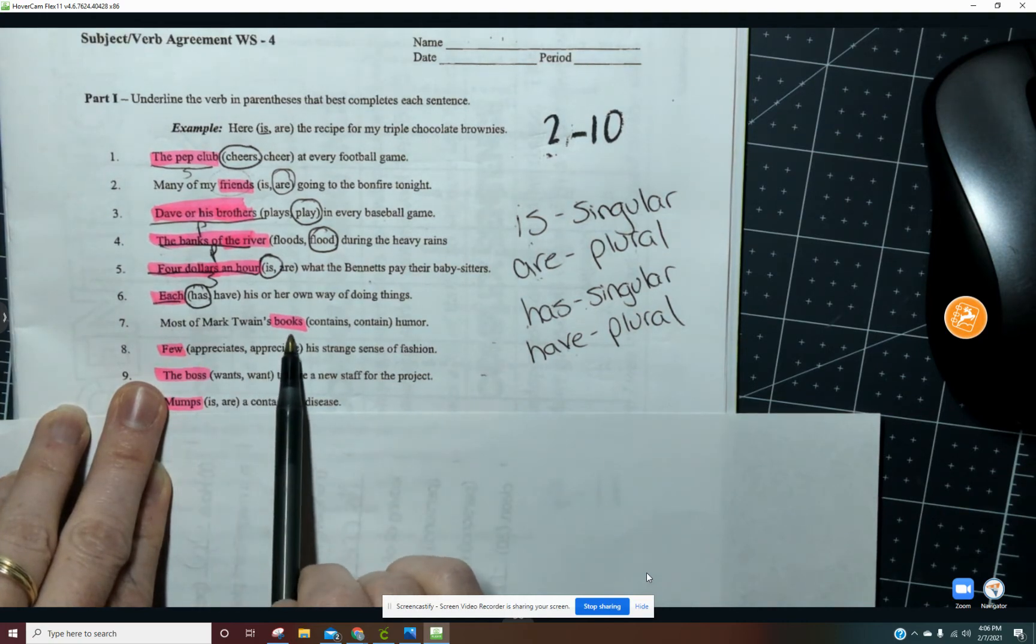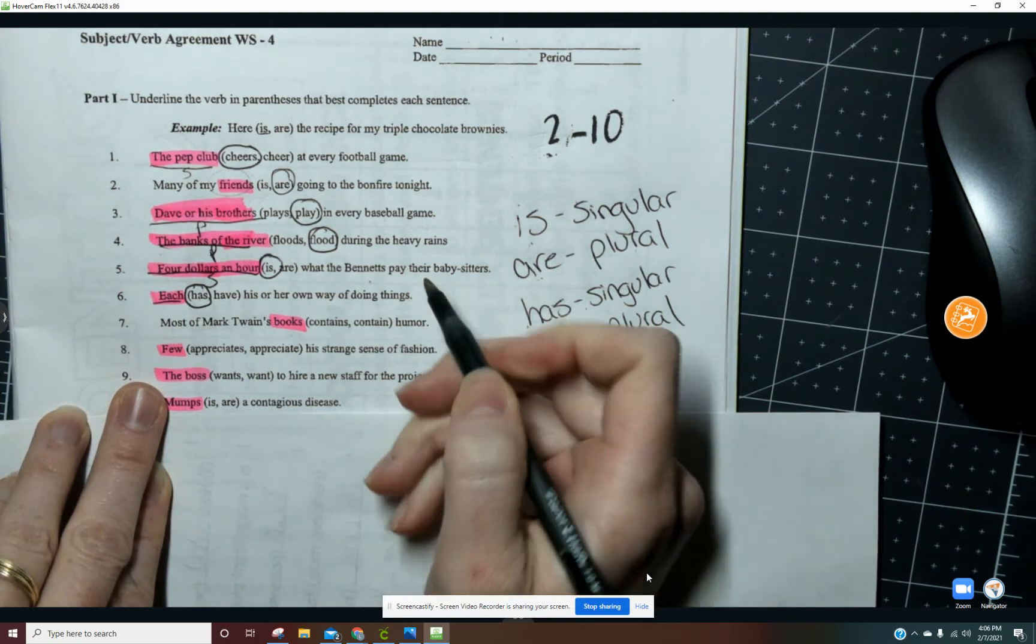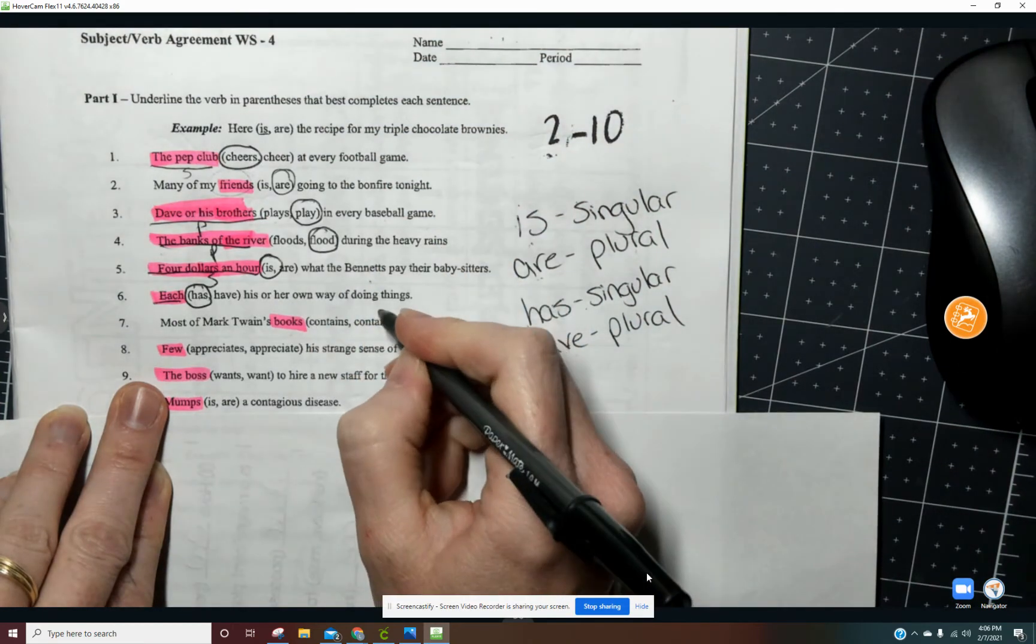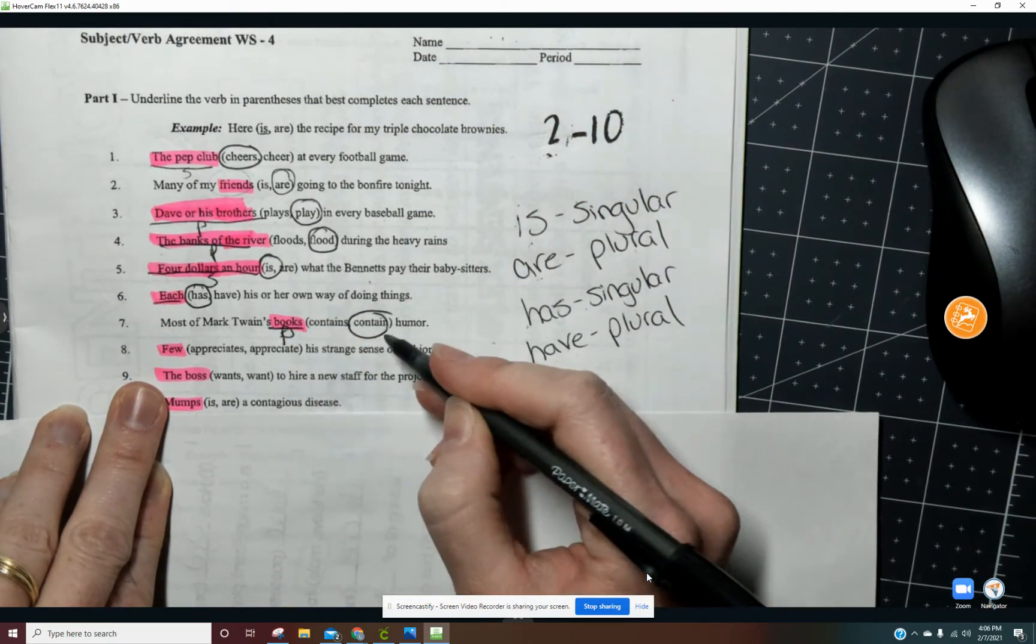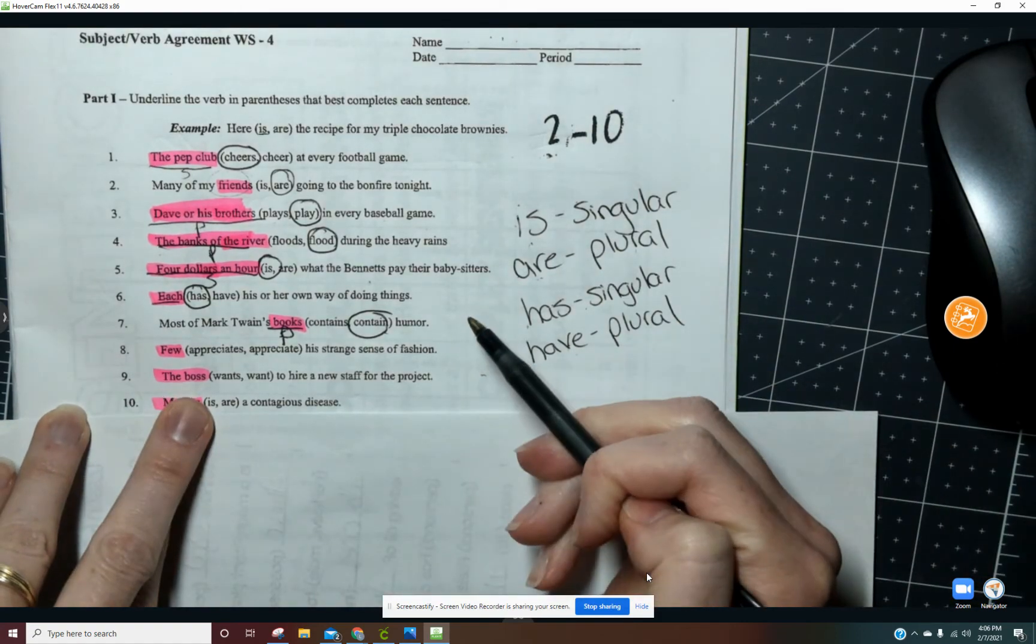Most of Mark Twain's books, so there's more than one book. So, our verb does not need, since this is plural, our verb does not need the S.